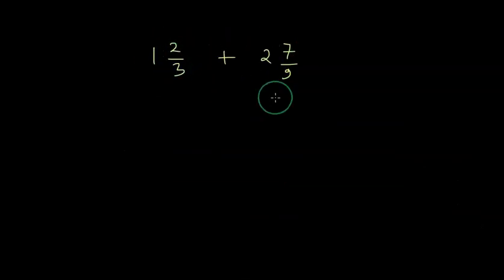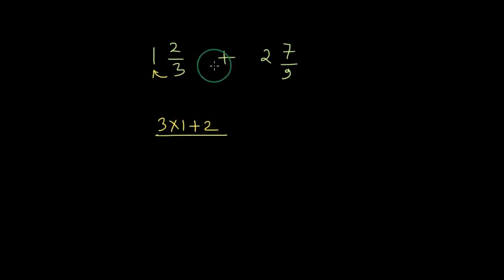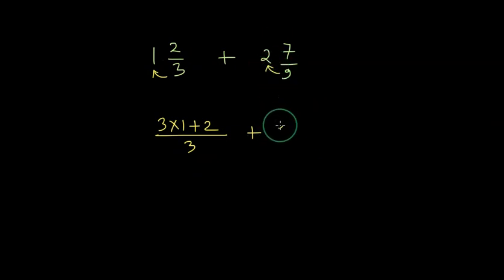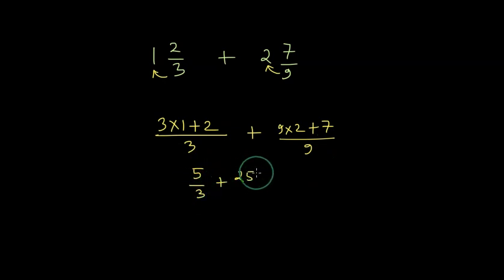Another very interesting way to do addition or subtraction is to convert any given mixed fraction into an improper fraction, where the numerator is greater than the denominator. What we do is multiply the whole part by the denominator and then add the numerator to it to get a new numerator, keeping the denominator as is. We can do the same thing here — multiplying 9 with 2 and adding 7 to get the new numerator, writing the same denominator, we get 5/3 plus 25/9.